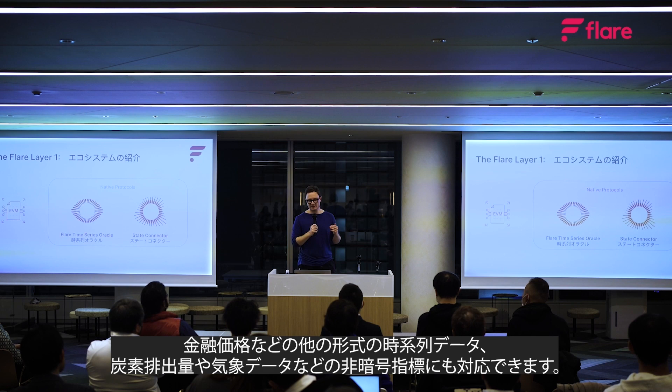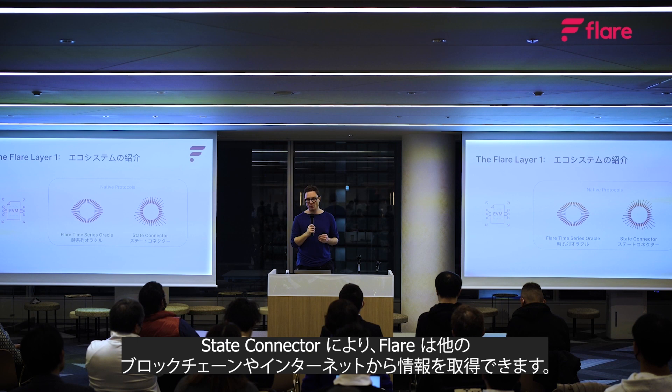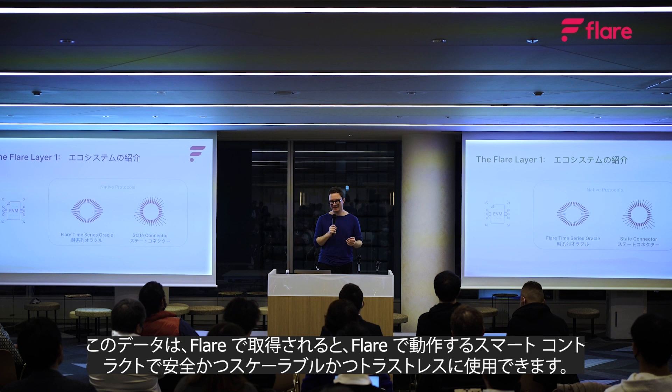The second protocol is what we call the State Connector. The State Connector allows Flare to acquire information from other blockchains and the internet. This data, once acquired on Flare, can then be used securely, scalably, and trustlessly with smart contracts operating on Flare.